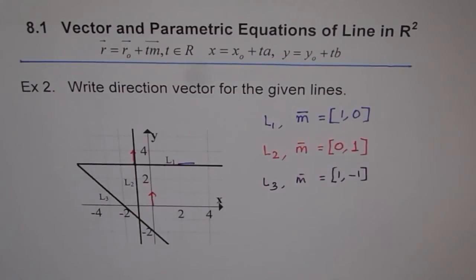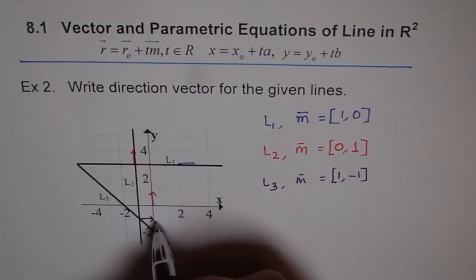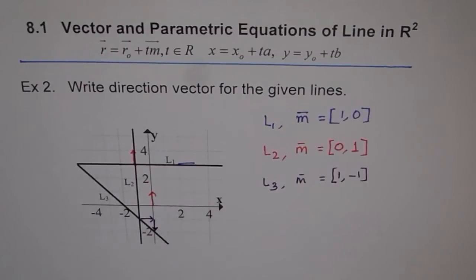So that is the direction vector of line 3. So you can see how we move. We move like 1 and then like this. So that is our direction vector for the given lines. So I hope it is now easy for you how to find the direction vector.